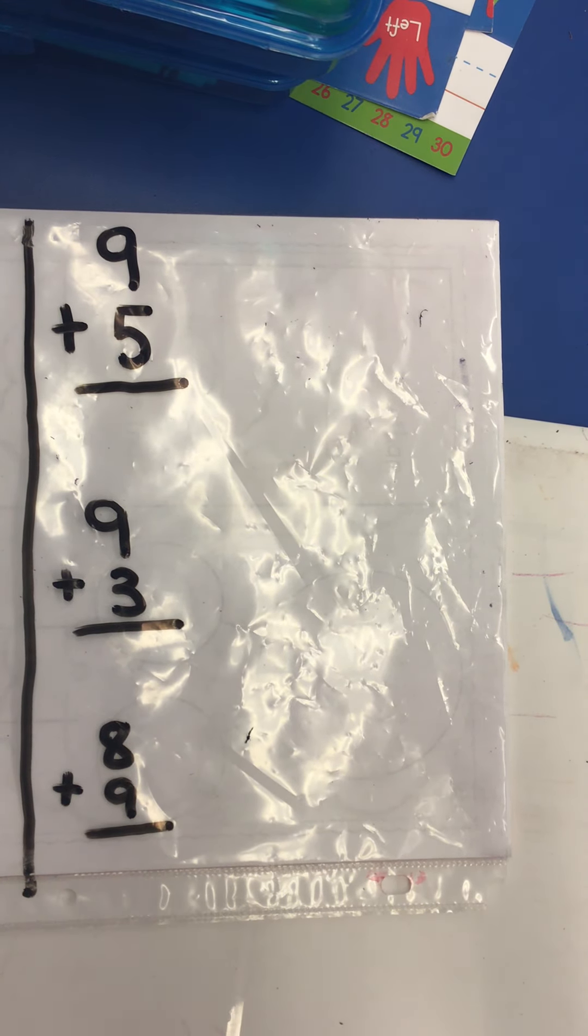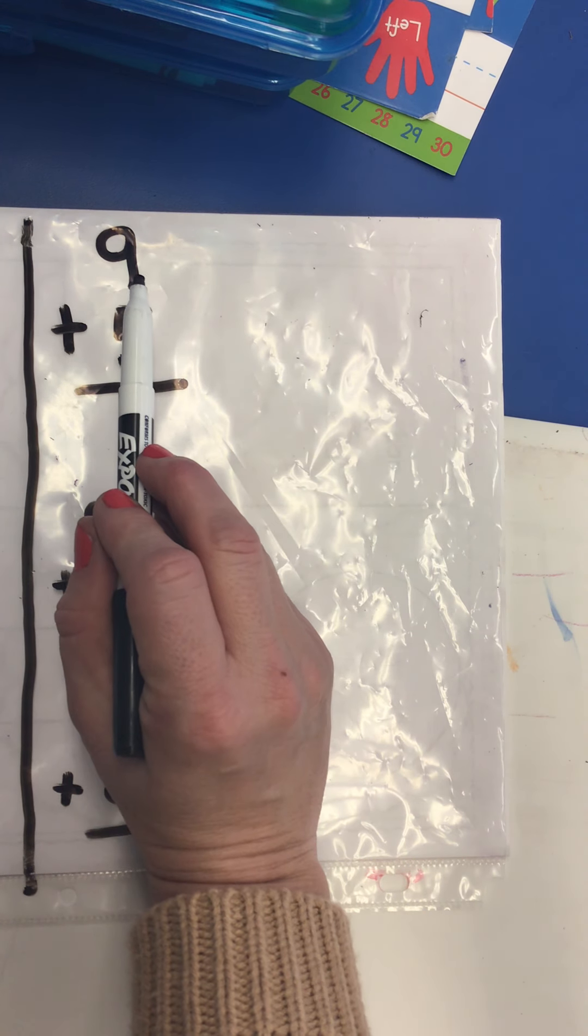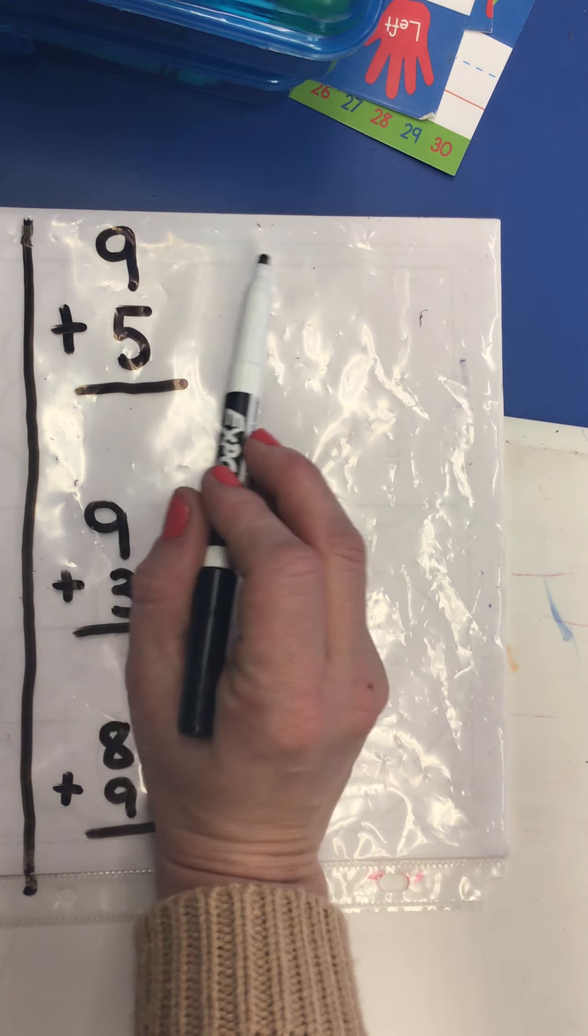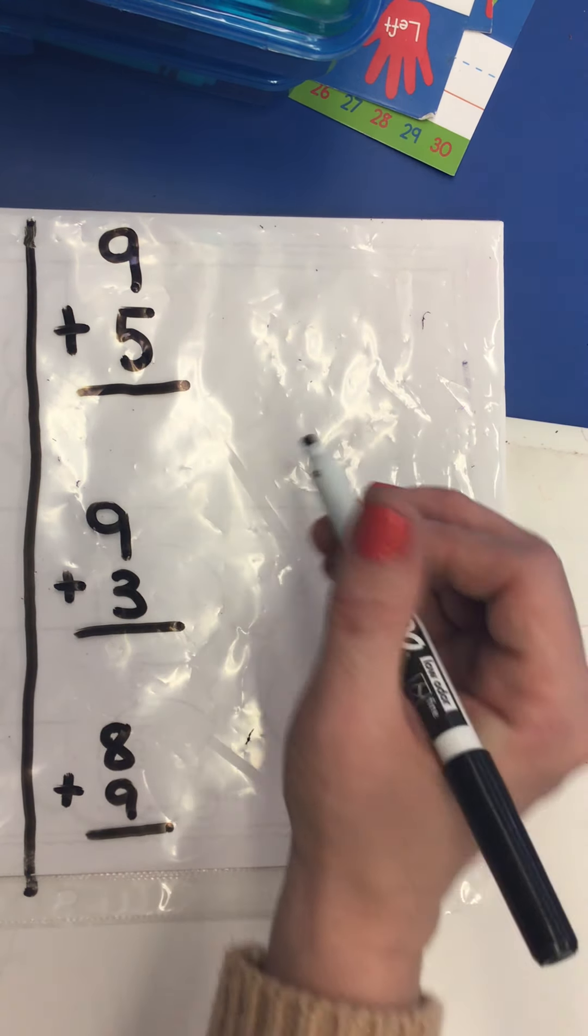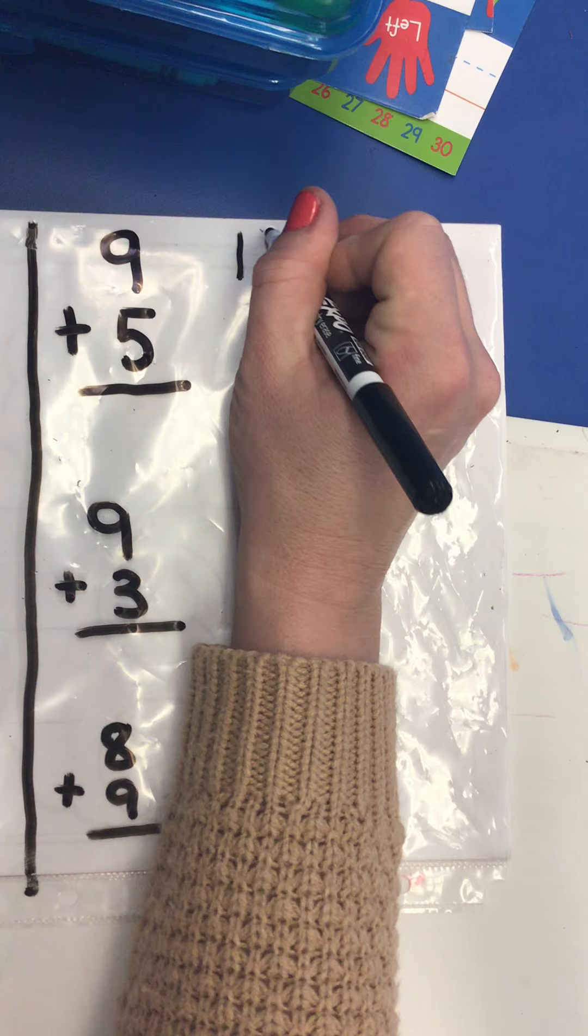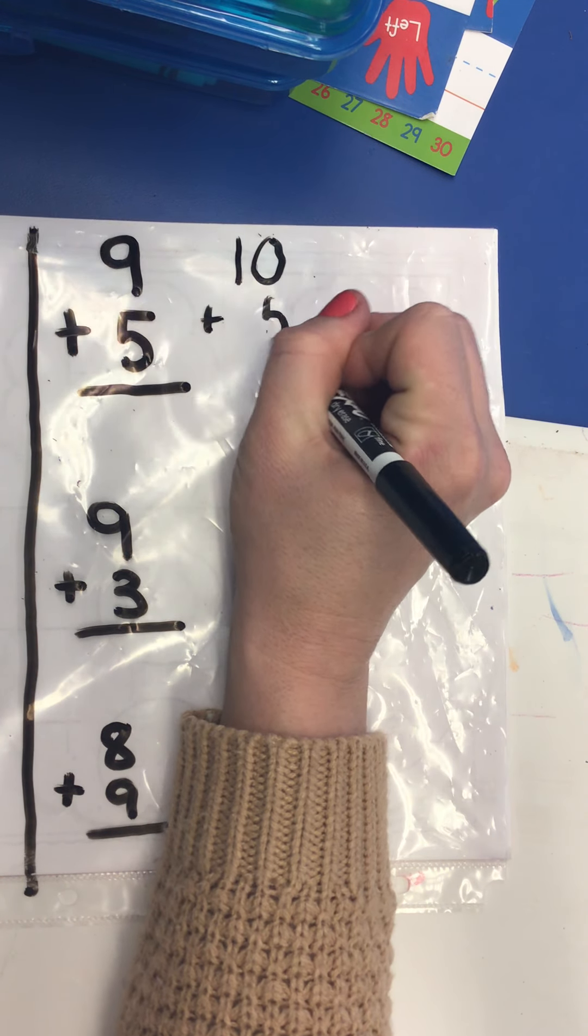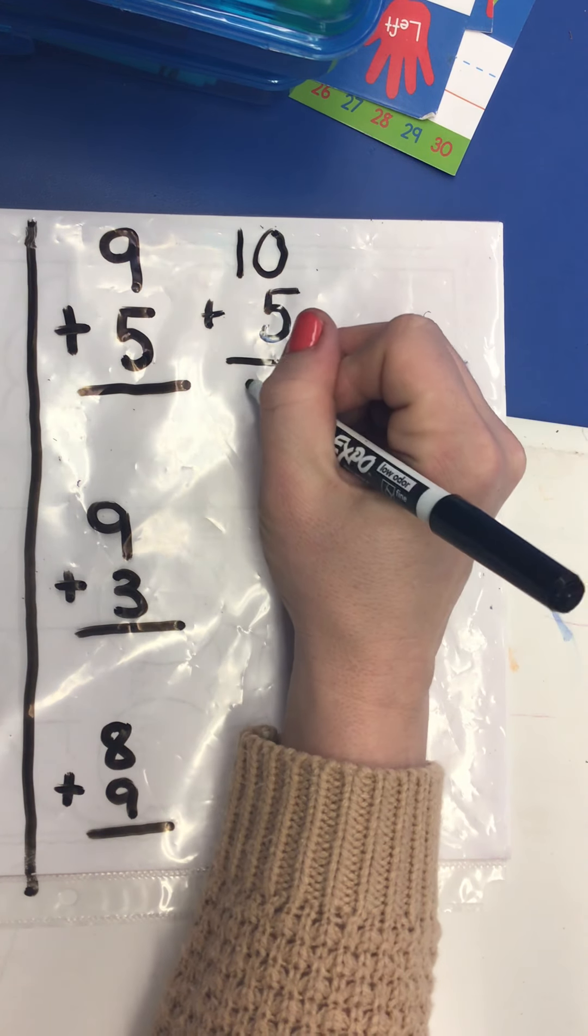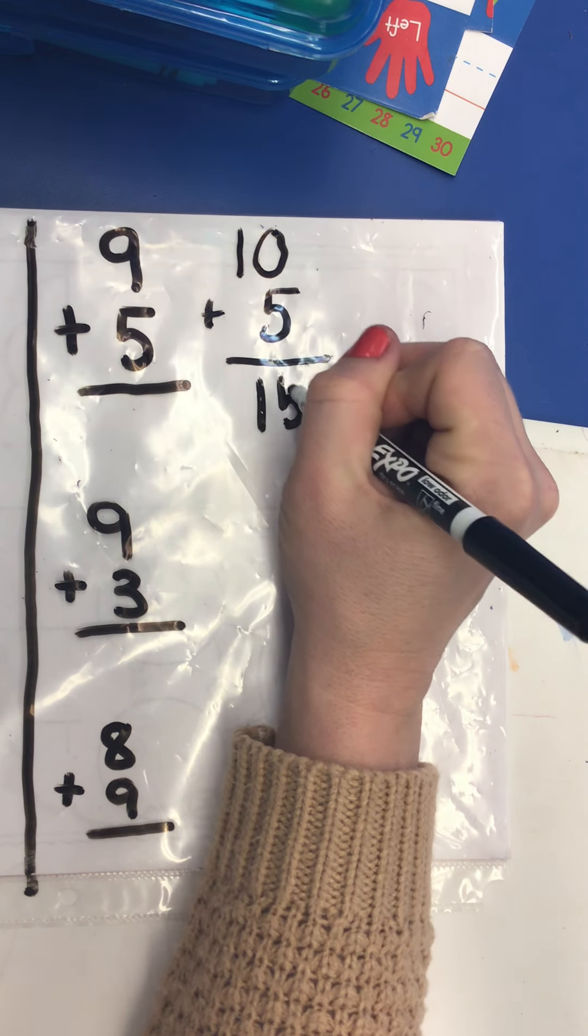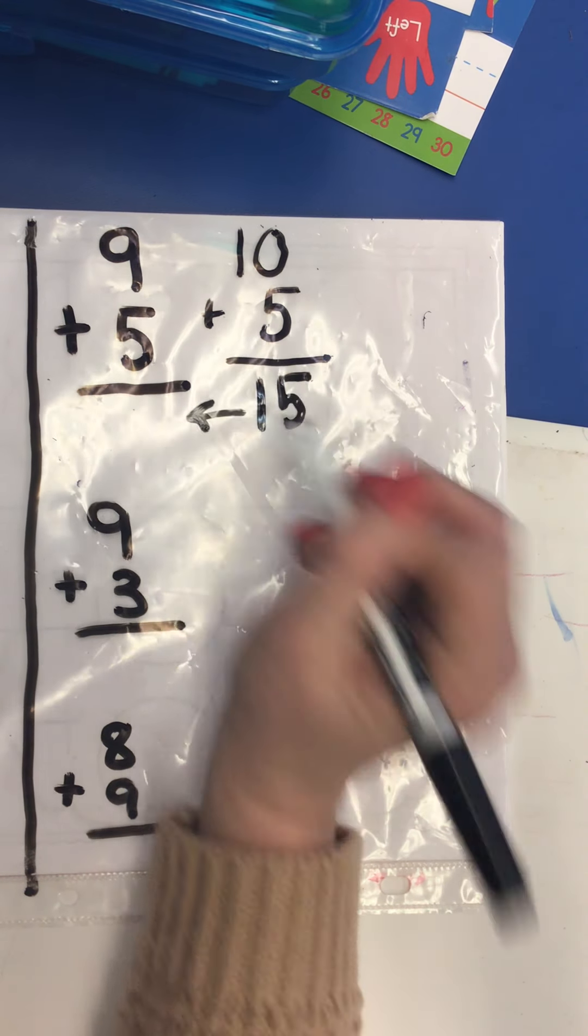So for example, if I have 9 + 5, do you see nine? I see nine. I'm going to see nine, but I'm going to think 10. I'm going to continue to add my 10 + 5. You know that's 15, but then I'm gonna hop back one.